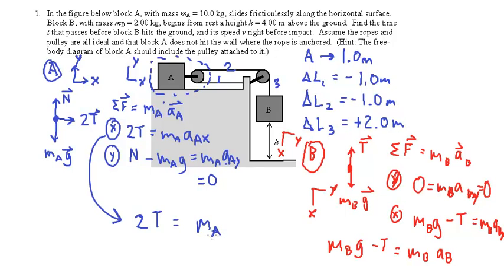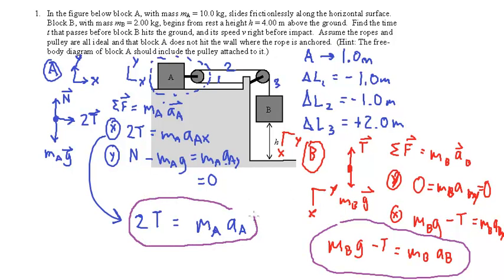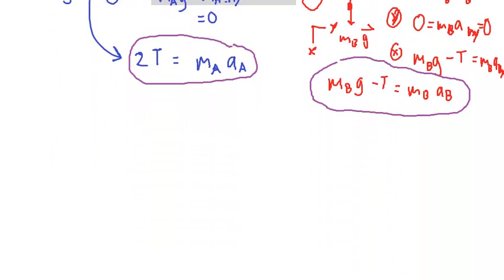In the X direction, we've got mass of B times g minus T equals mass of B times acceleration of B in the X direction. Let me just write that again in slightly more comfortable form. Mass of B times g minus T equals mass of B times acceleration of B. I'm just going to call it aB. I'm dropping the X's because I want to make the point these are only accelerating in their own X directions. It's perfectly legal to have different coordinate systems for different objects here. In fact, it makes it easier.